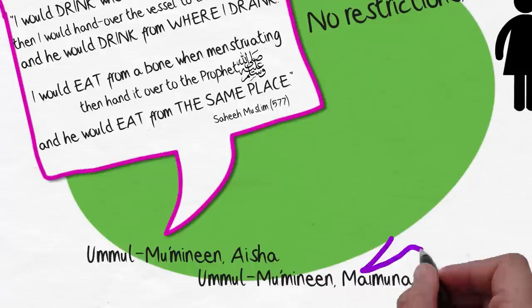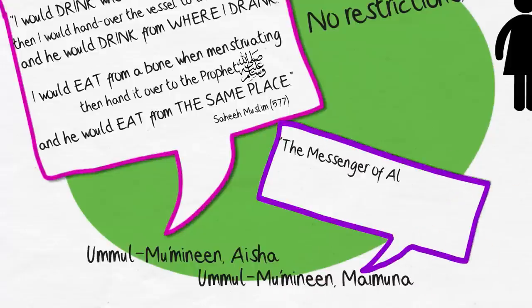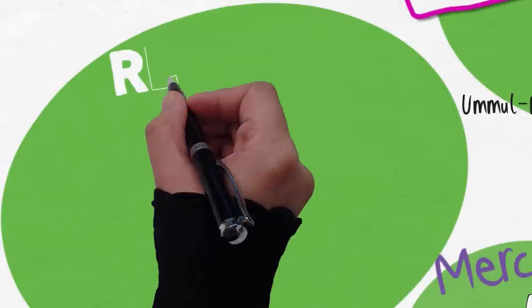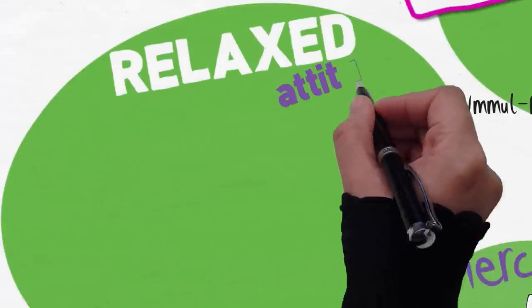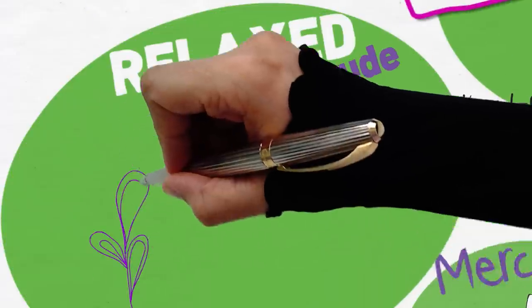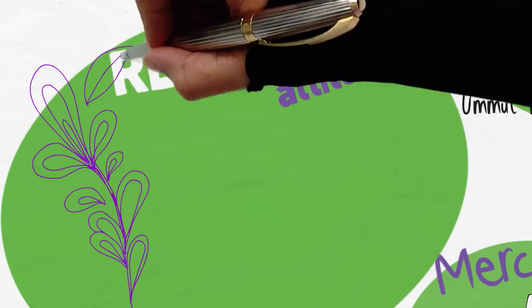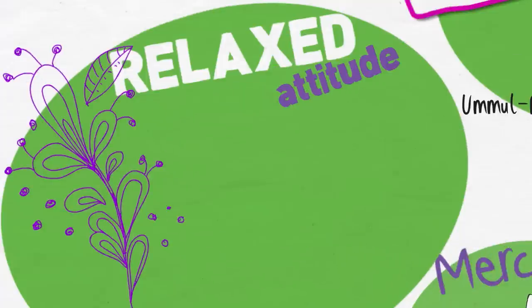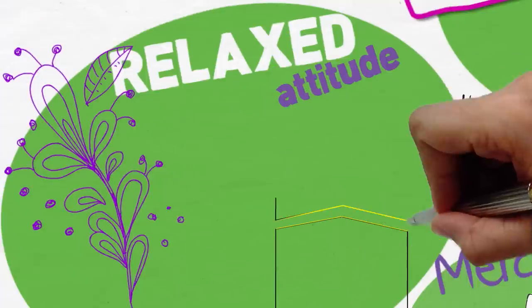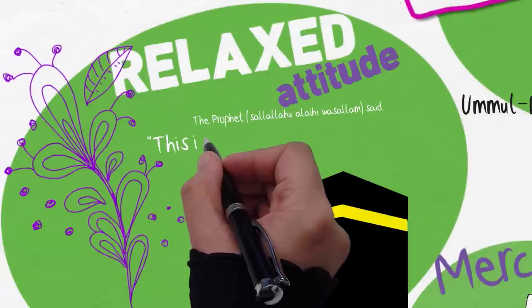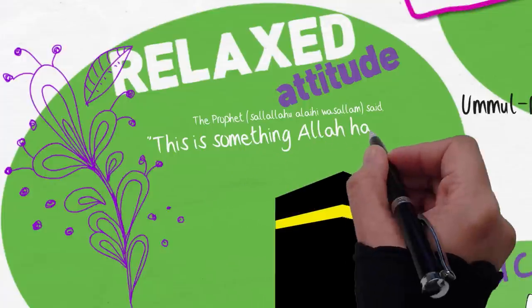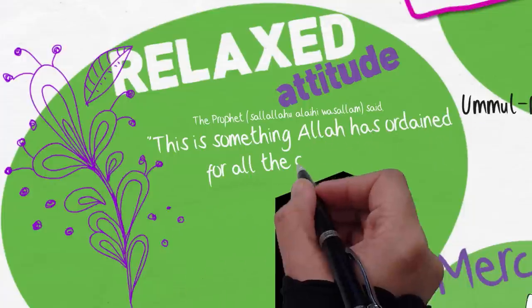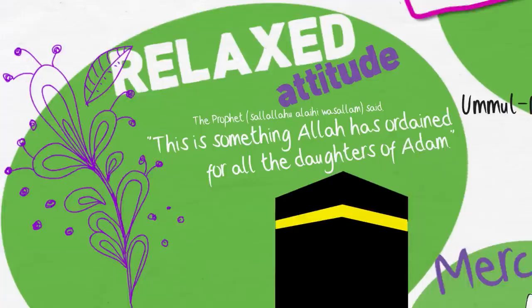Umm al-Mumineen Maimuna radiallahu anha narrates the messenger of Allah used to lie with me when I was menstruating. Such relaxed attitude because Islam sees the monthly cycle as a natural biological process. When Allah's messenger found Aisha radiallahu anha weeping because of the monthly cycle during Hajj, he consoled her. He said this is something Allah has ordained for all the daughters of Adam, so do everything except Tawaf.